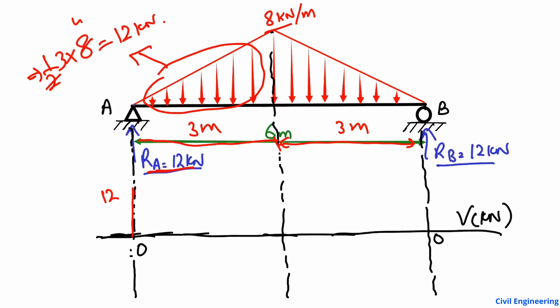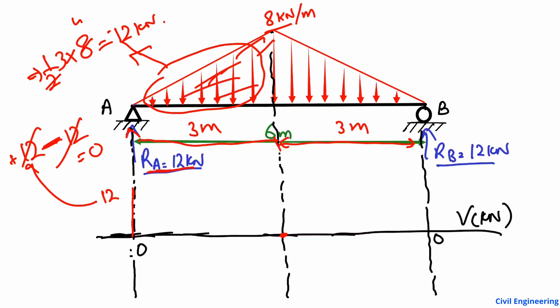That gives 12 kilonewtons acting downward. The upward reaction was 12 kilonewtons positive, and the downward load is 12 kilonewtons negative, so they cancel: 12 minus 12 equals zero. At the midpoint the shear force reaches zero. This portion of the diagram is positive shear force.